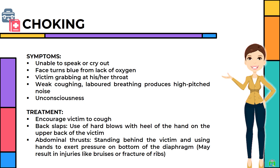Additional symptoms include unconsciousness. Treatment for choking: encourage the victim to cough; back slaps — use hard blows with the heel of the hand on the upper back of the victim; and abdominal thrusts — standing behind the victim and using hands to exert pressure on the bottom of the diaphragm. Note this may result in injuries like bruises or fracture of ribs.